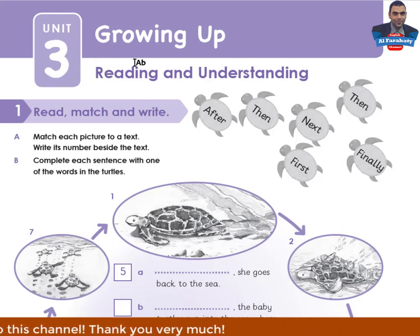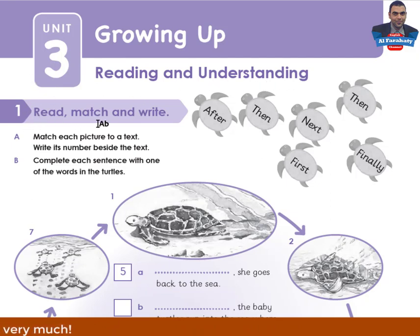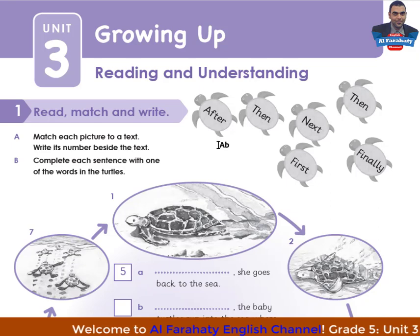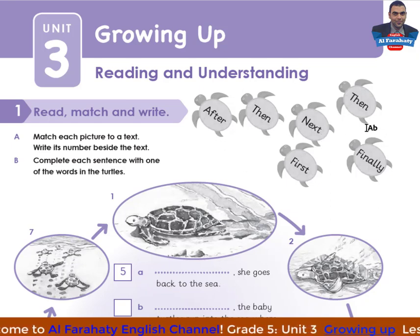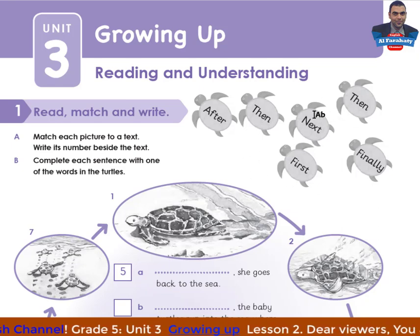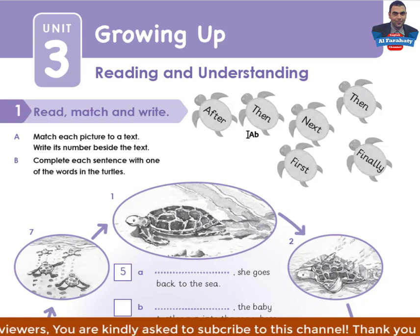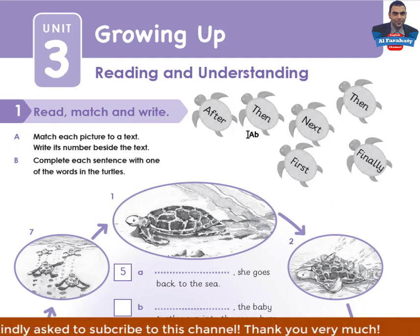Unit 3, Growing Up, reading and understanding. Activity 1: Read, match and write. A — match each picture to a text and write its number beside the text. B — complete each sentence with one of the words in the turtles. These time sequencers are: first, then, next, after, finally. These can be used to put events in order.